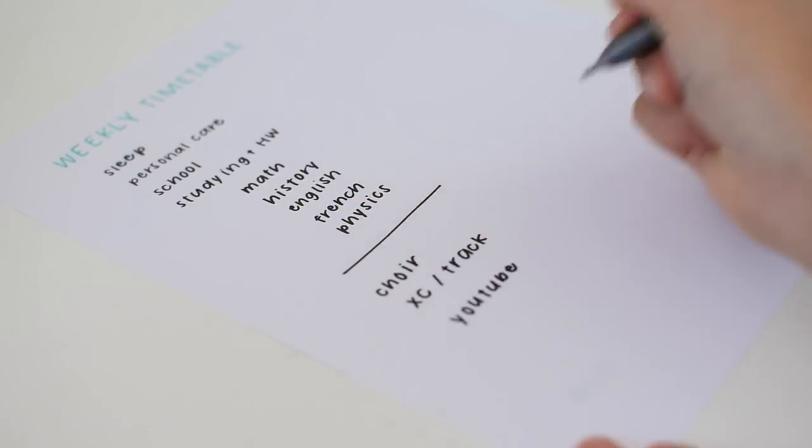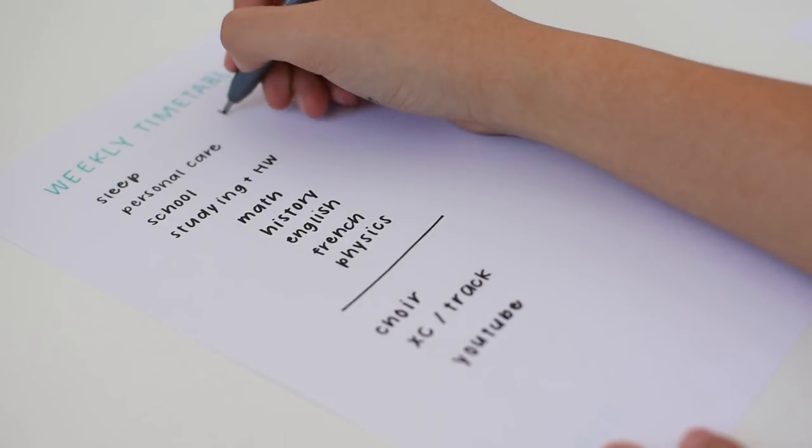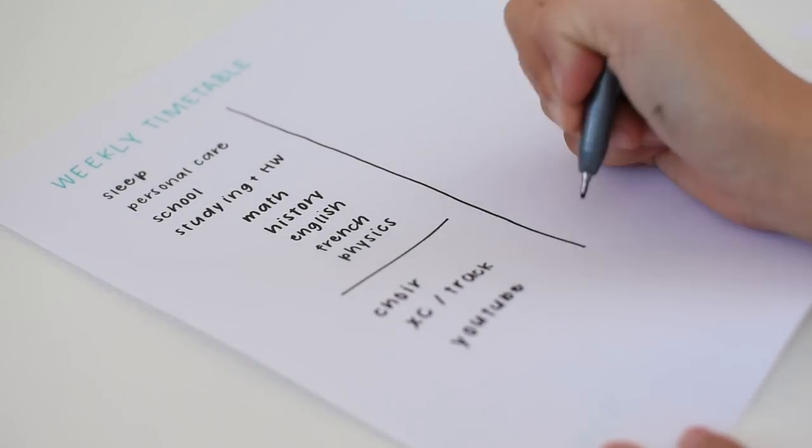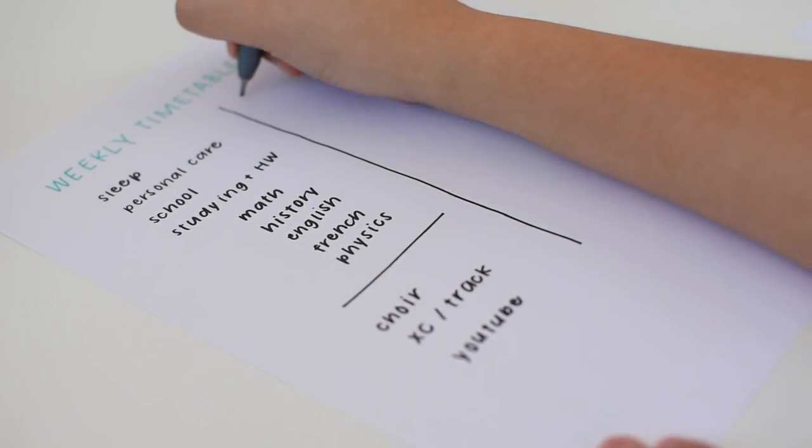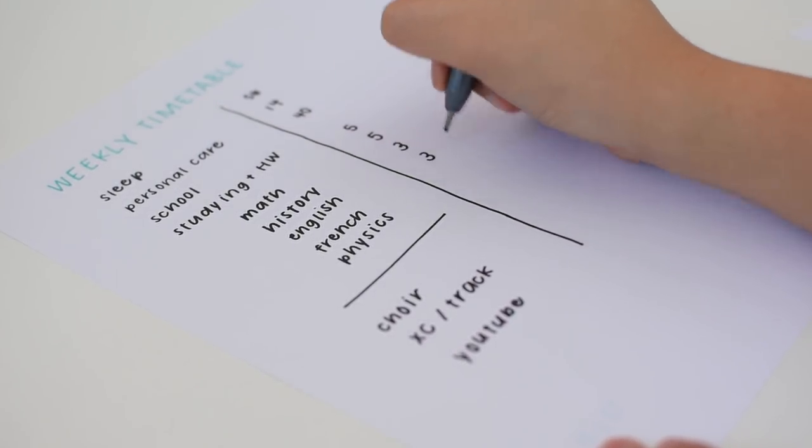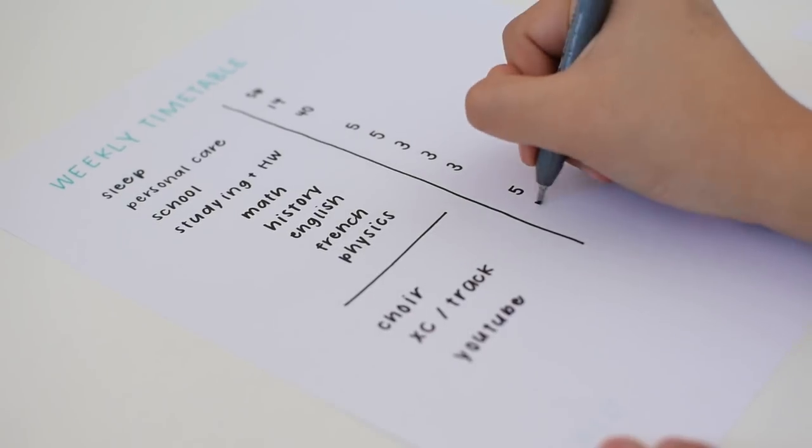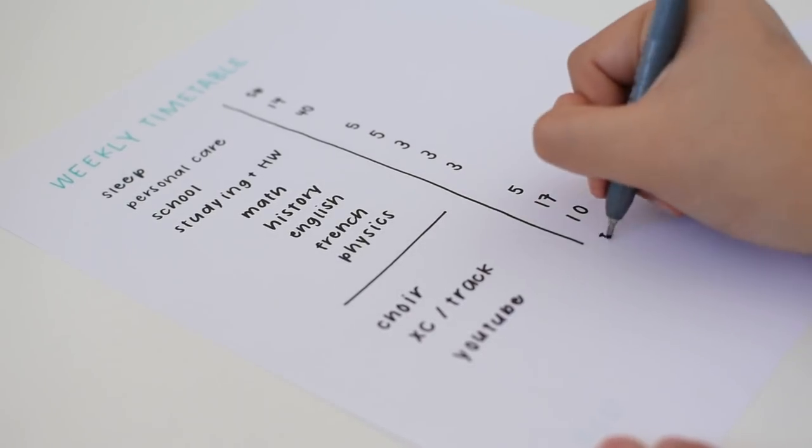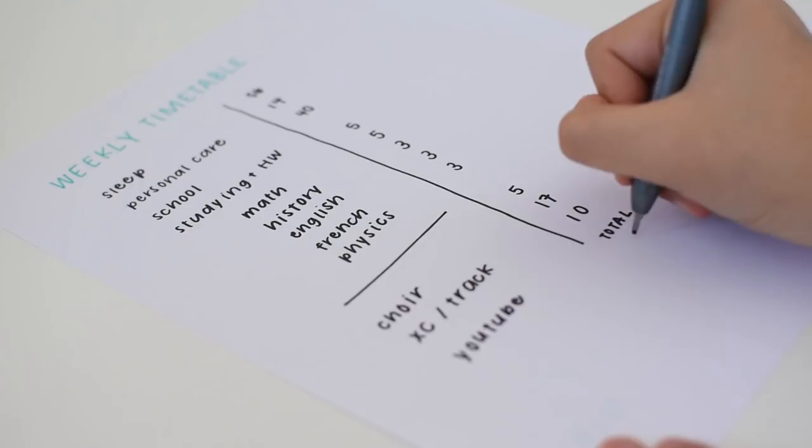Once you've got everything listed out, add it up and make sure it's less than 168 hours each week. If you don't have enough time in the week to do everything you want to do, you'll have to either cut something out or take easier classes that will take less time to study for or do homework for.